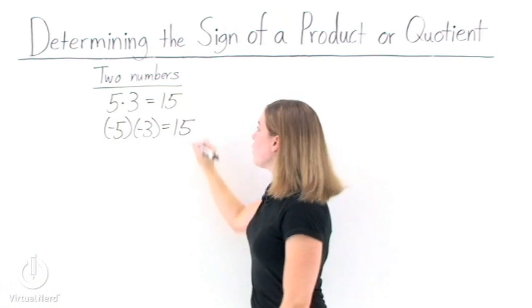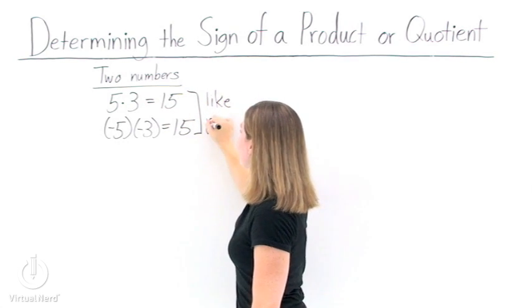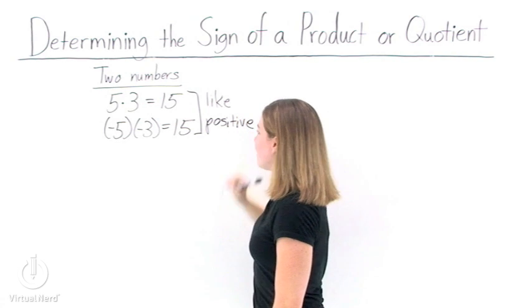So, if you're multiplying or dividing two numbers together that have the same or like signs, your answer is going to be a positive number.